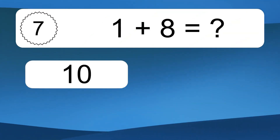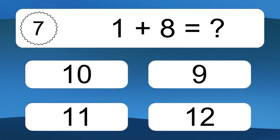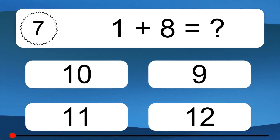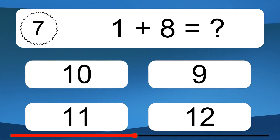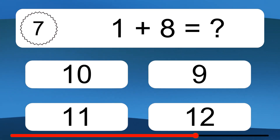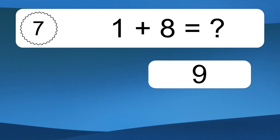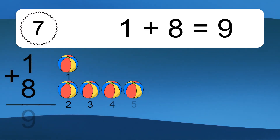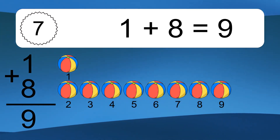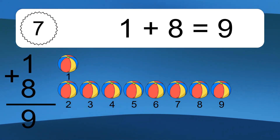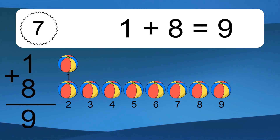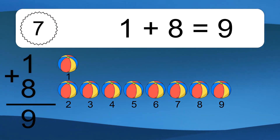1 plus 8 equals what? 1 plus 8 equals 9. Let's count it. 1, 2, 3, 4, 5, 6, 7, 8, 9.